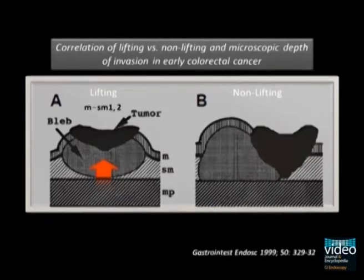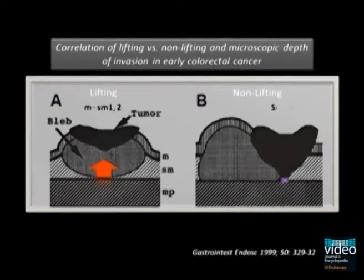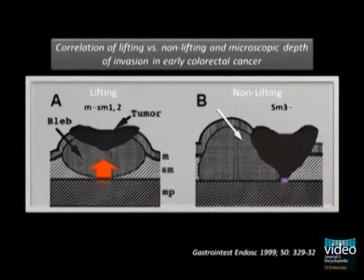As shown in figure B, the dense fibrosis associated with invasive carcinoma, classified as SM3, prevents fluid infiltration through the submucosal connective tissue. Thus, there is no bleb formation and the lesion is not elevated. This is called a positive non-lifting sign.